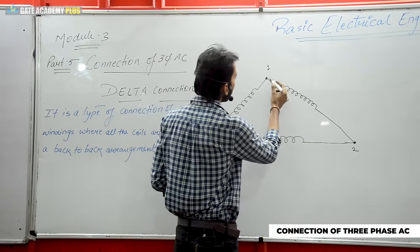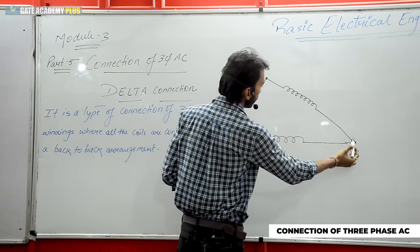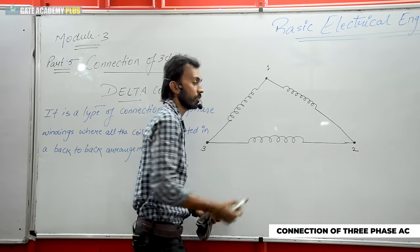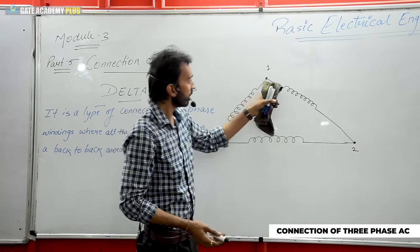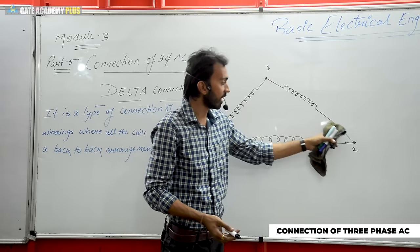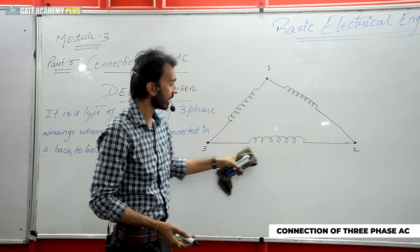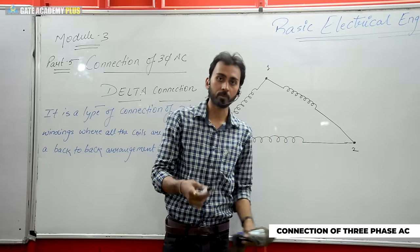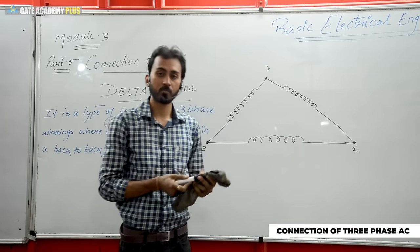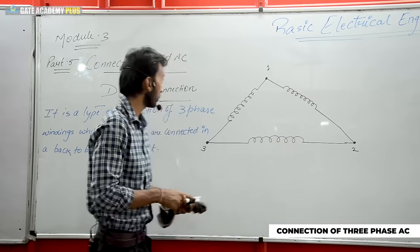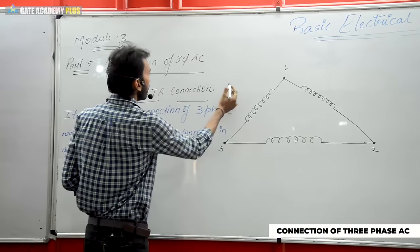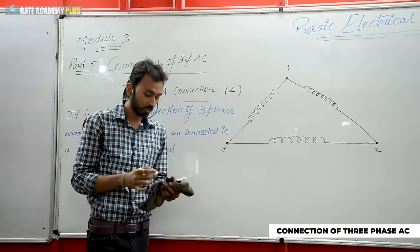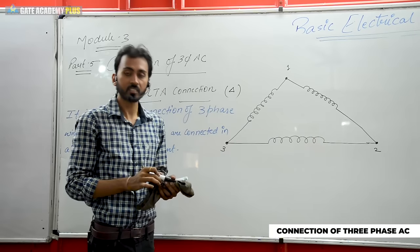One winding section is from one to two, the second winding is two to three, and the third winding is three to one. So where the first section ends, the second winding starts; where the second ends, the third; and where the third ends, back to the first. This type of formation is known as delta formation. Usually it can be shown in triangular form — this is the standard formation of delta.